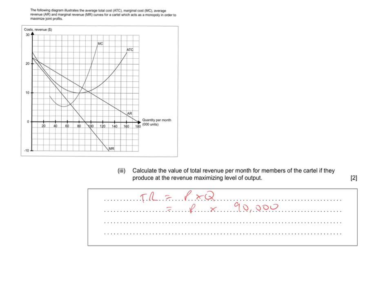So we're left with having to find P at 90,000 units. To do that, find 90,000 units, go up until we hit the demand curve and read off. So doing this on the diagram, we can see that the price is equal to $11 times our 90,000 units a month gives us the total revenue of the cartel of $990,000.